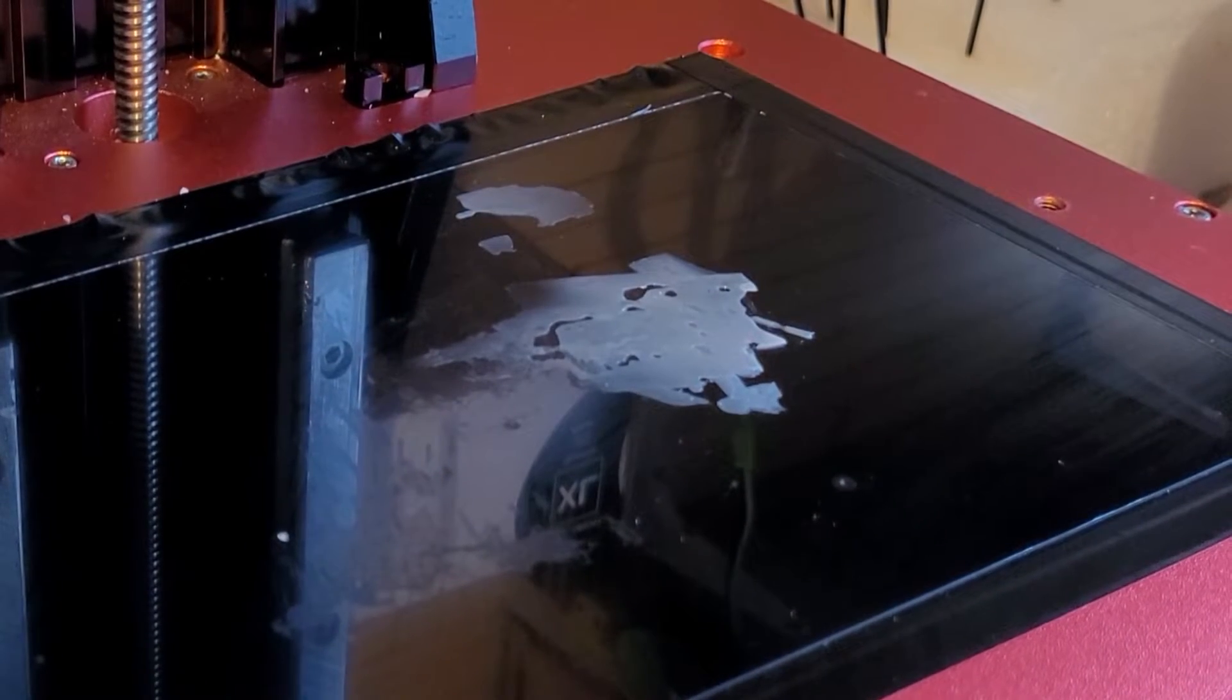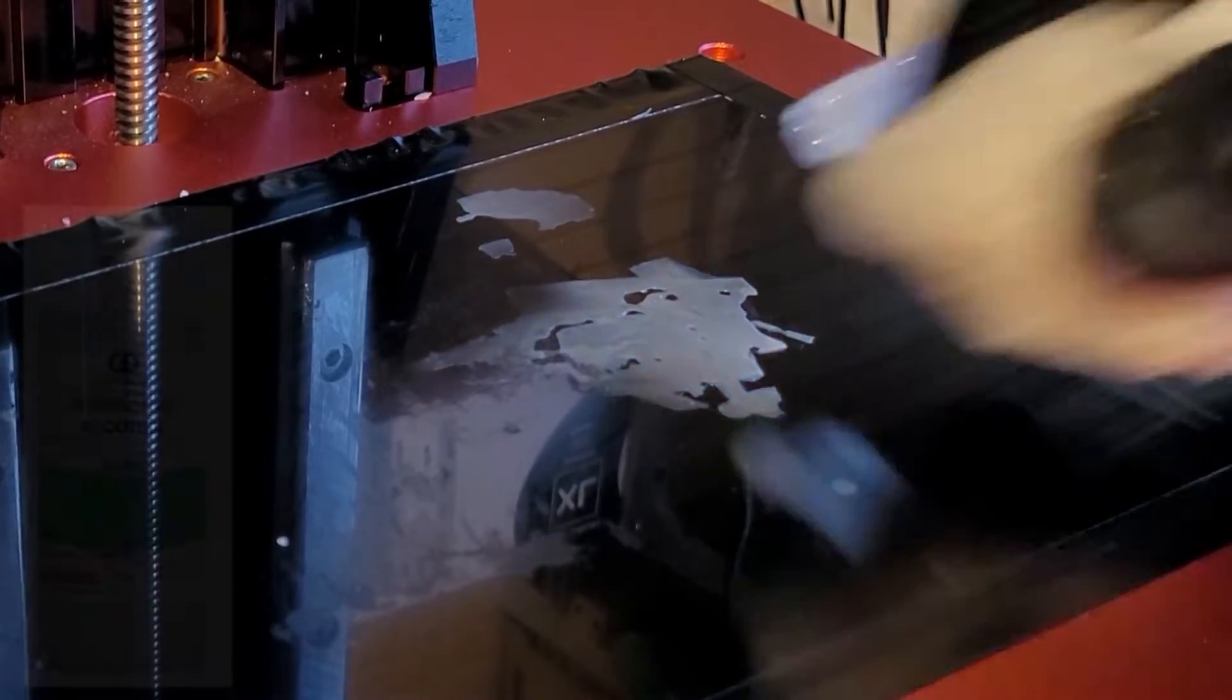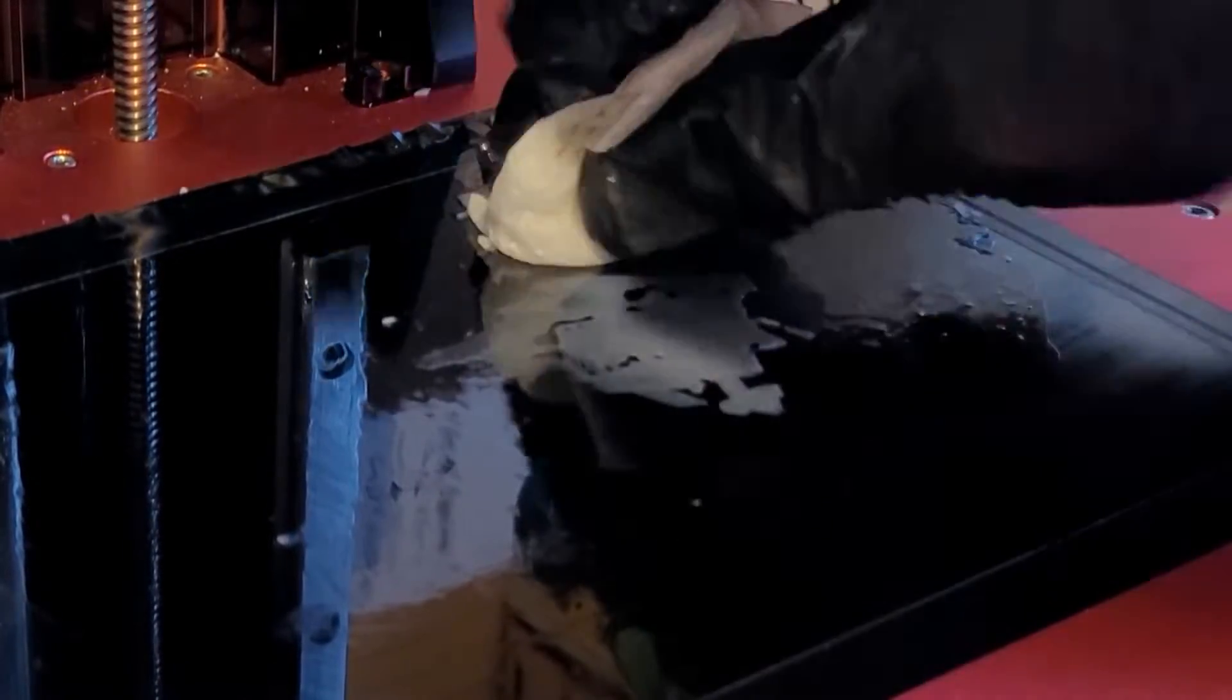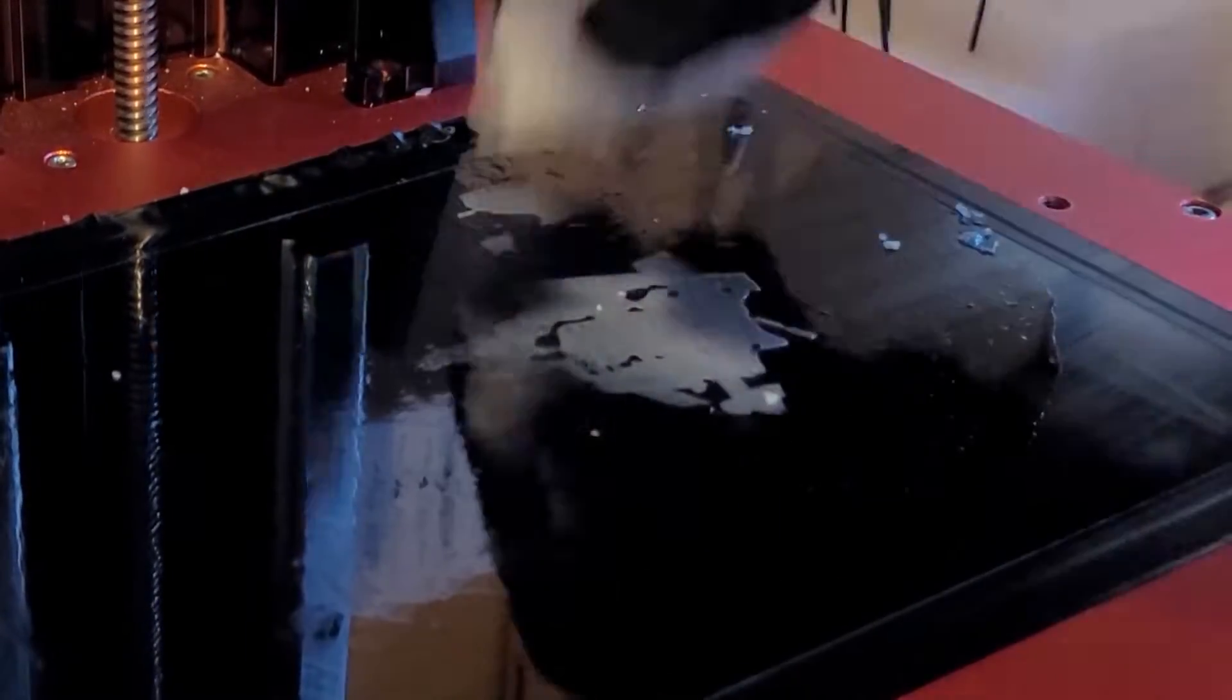First thing you're going to do is soak it with a little bit of IPA. Get it really wet with IPA. You can soak a rag or cloth in IPA and leave it lying on the top, which will help to soften it. Now, this is water washable resin, but you'd still find IPA will do the job wonderfully.